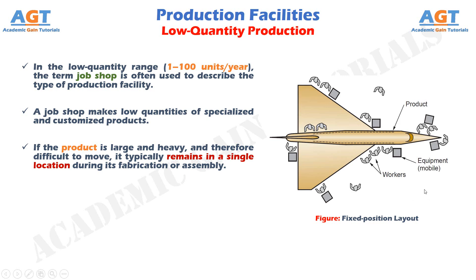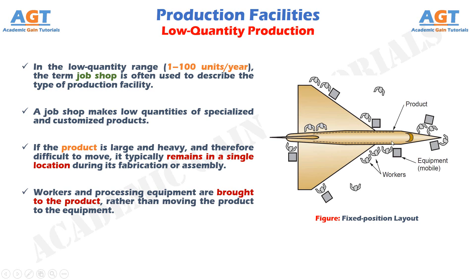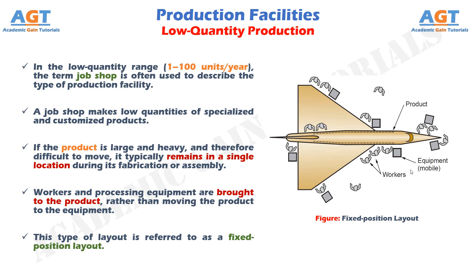If the product is large and heavy, and therefore difficult to move, it typically remains in a single location during its fabrication or assembly. Workers and processing equipment are brought to the product rather than moving the product to the equipment. This type of layout is referred to as a fixed position layout, shown in this figure. In a pure situation, the product remains in a single location during its entire production. Examples of such products include ships, aircraft, locomotives, and heavy machinery.